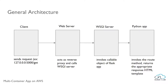In general, the architecture looks like this. We have a client, we have a web server, and we have the application. The WSGI server is just like a middleware between the web server and the Python application. We shall understand about it in the next section.